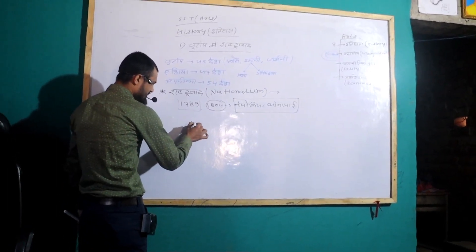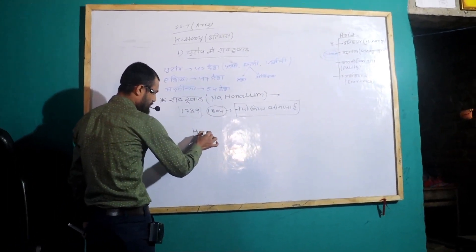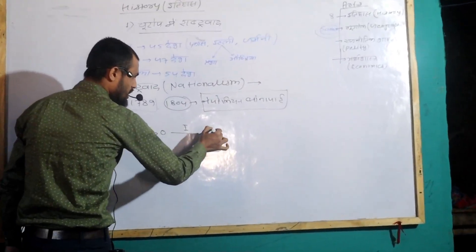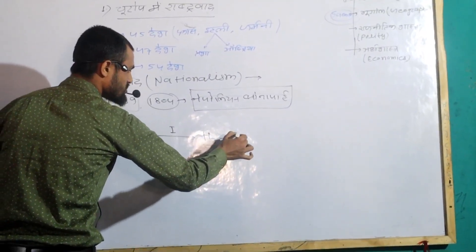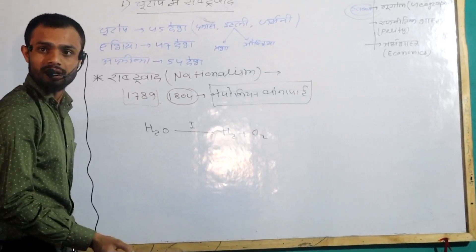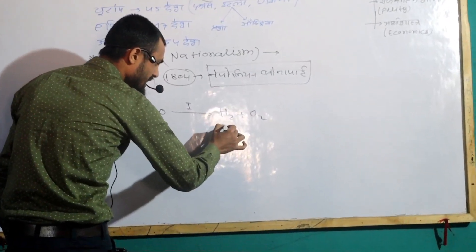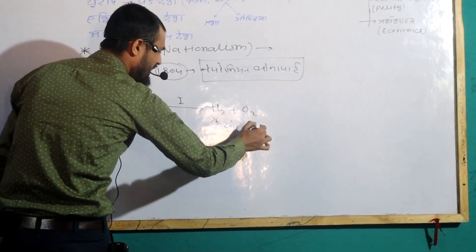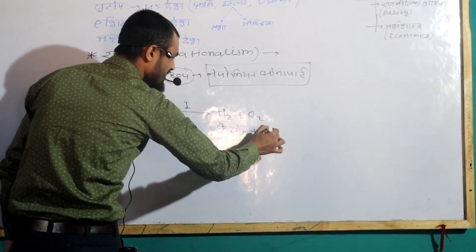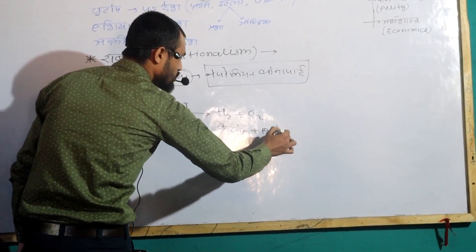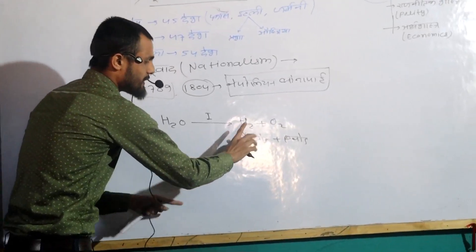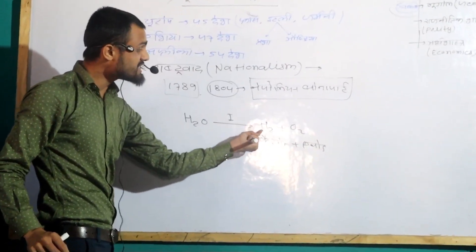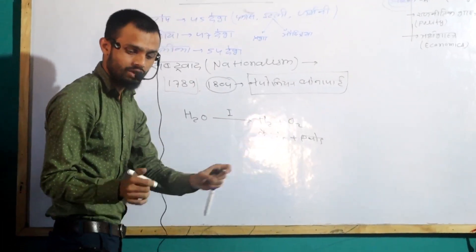We have learned that hydrogen gas and oxygen gas are different. Hydrogen gas is at the cathode plate and oxygen gas is at the anode plate. So cathode and anode — we are going to experiment with this and talk about hydrogen gas and oxygen gas.